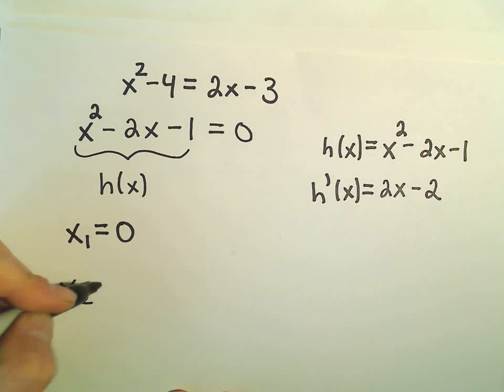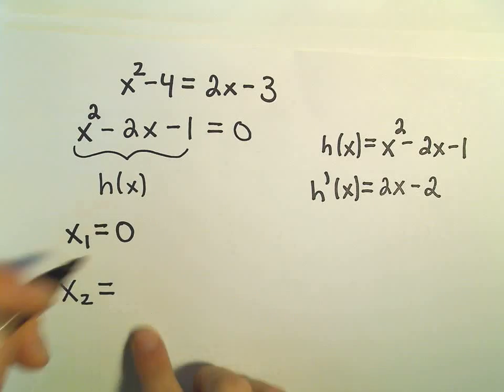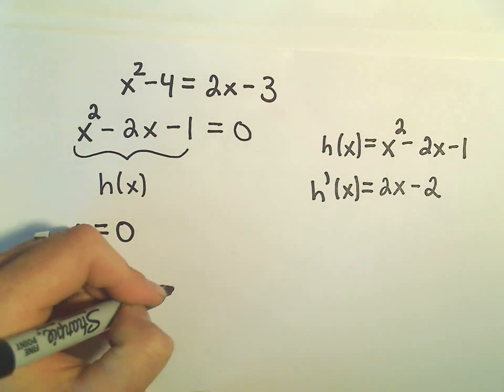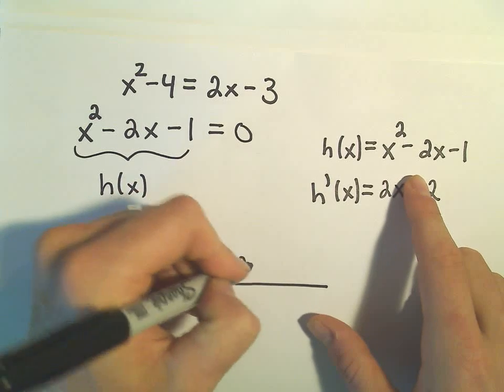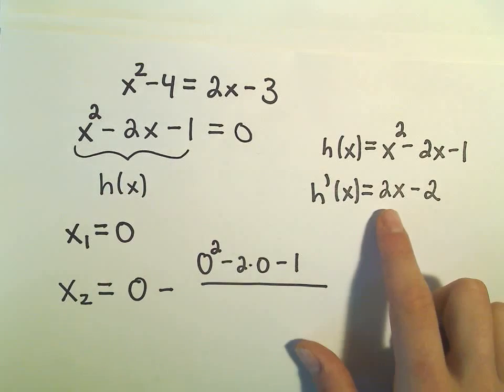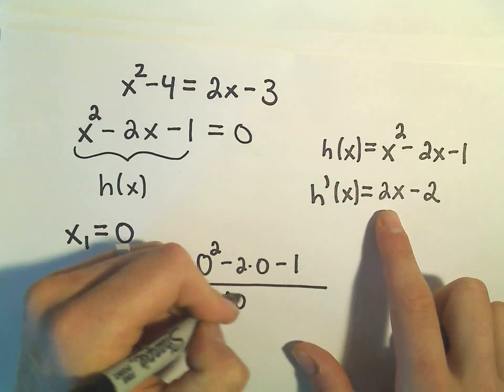So to get our second guess, we take our first guess, which is 0, and then we subtract away. We have to plug 0 into the original function, and then we have to plug 0 into the derivative.